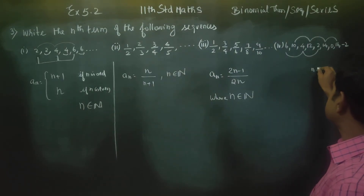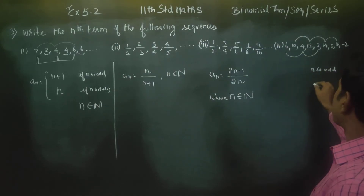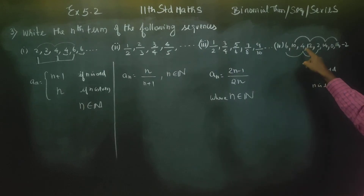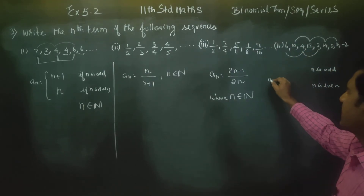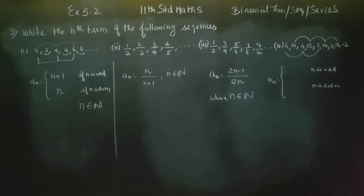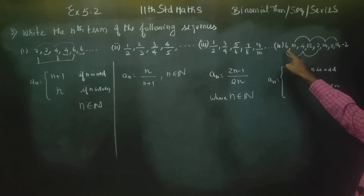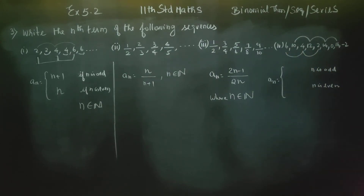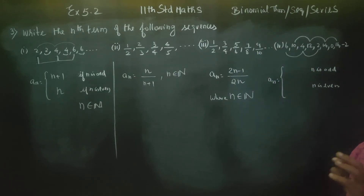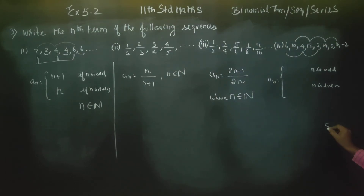When n is odd and when n is even, we consider both cases for n equal to 6. So if you put an equal to and apply the formula, the first number is 6. If you put a number of values into the formula, you get 6.